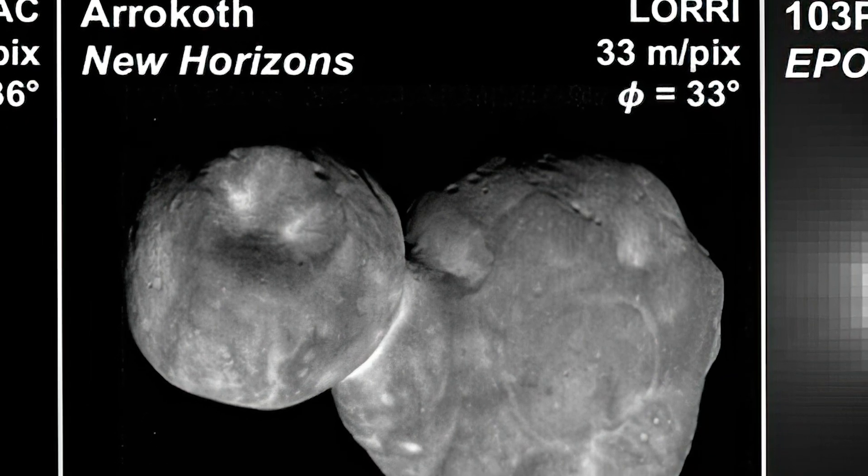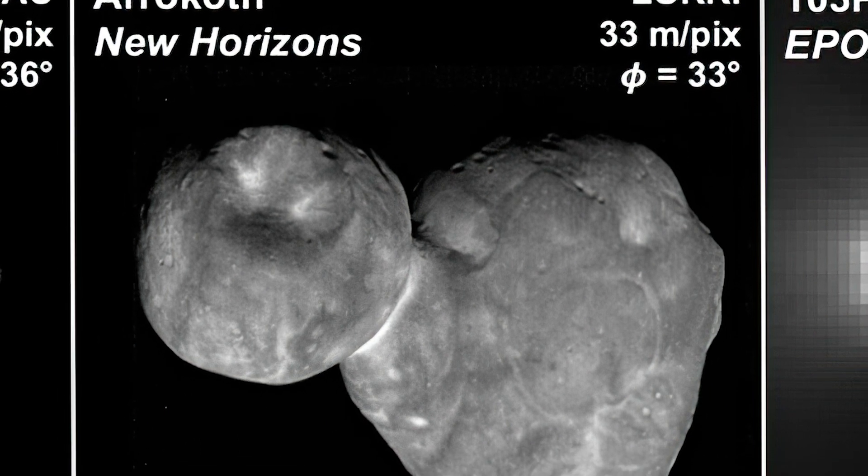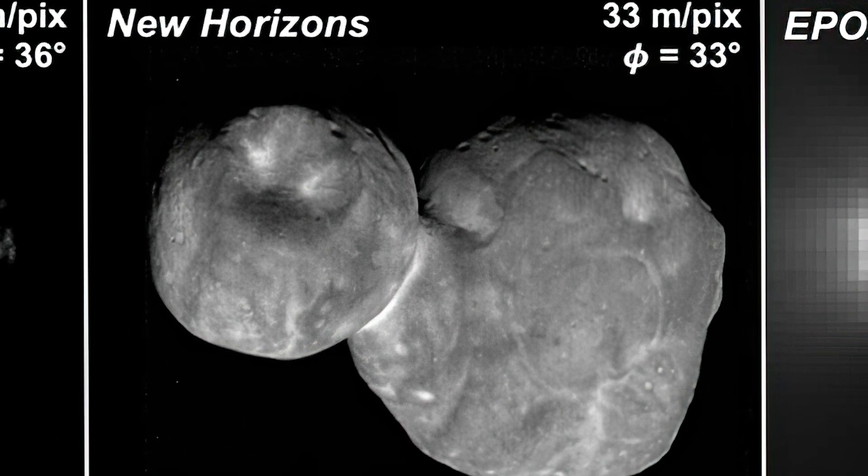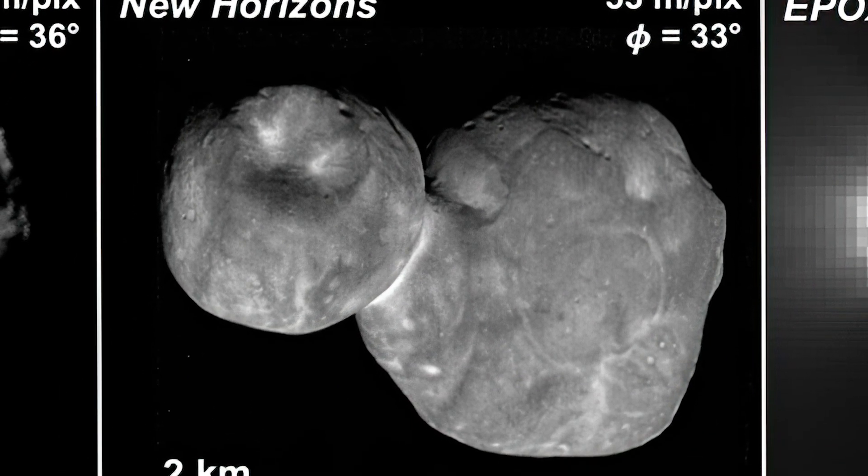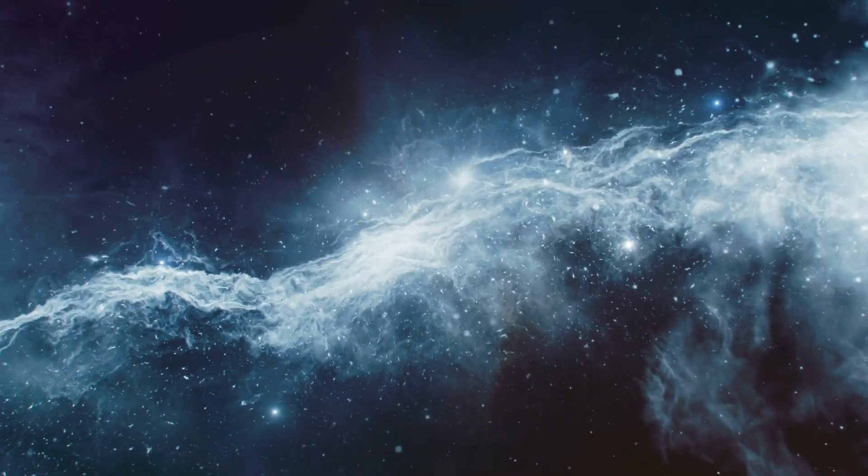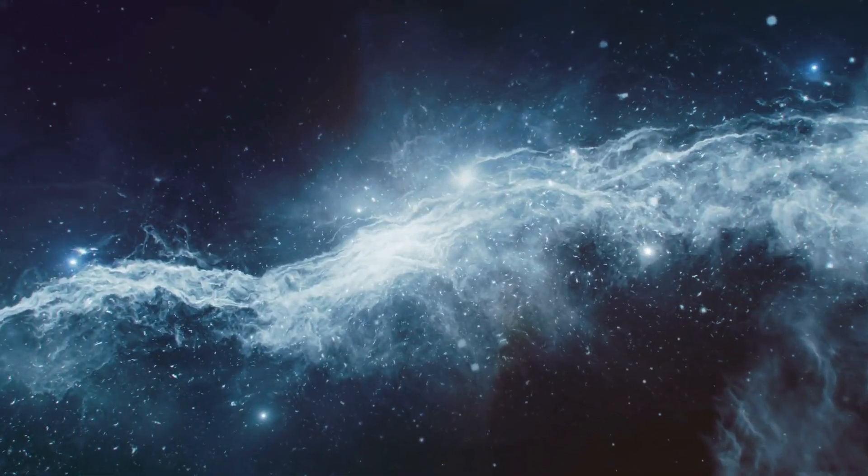NASA's New Horizons team snapped its first image of Arakoth, then named Ultima Thule, in August 2018, at a distance of over a hundred million miles from Earth. At the time, the target remained one of several dots among a field of stars.